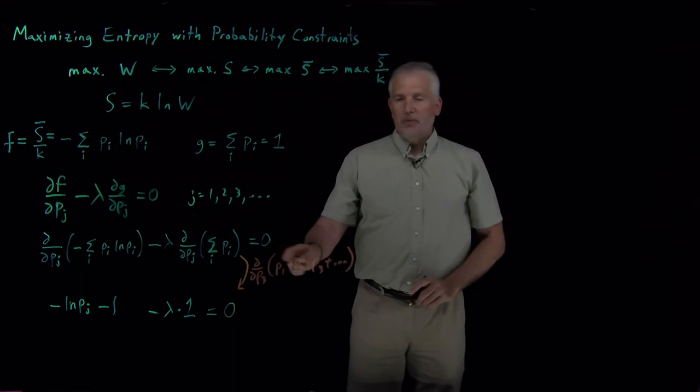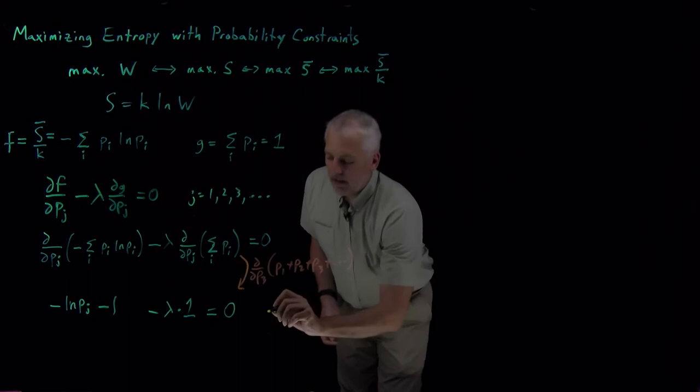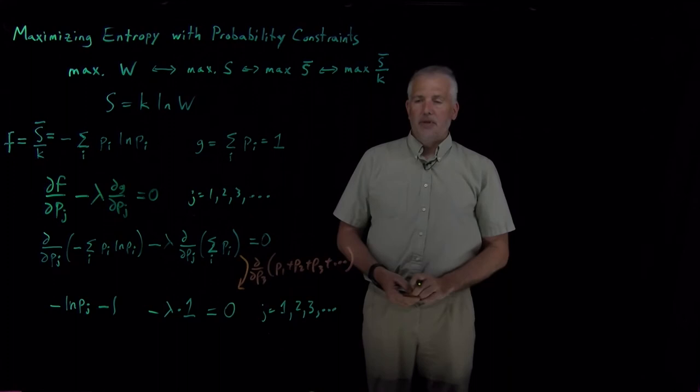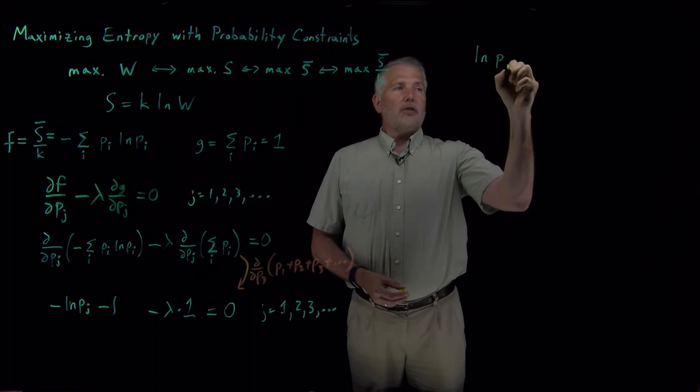Those things must be equal to zero if we're at a minimum. And again, for j equals 1, 2, 3, and so on. For every one of these states, the log of its probability with a negative sign minus 1 minus a lambda has to add up to zero. So rearranging that equation tells us log of Pj must equal minus lambda minus 1.